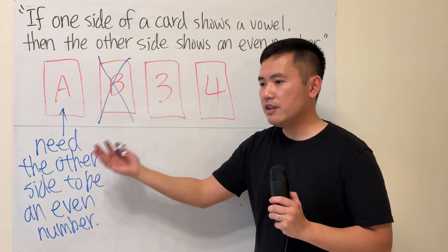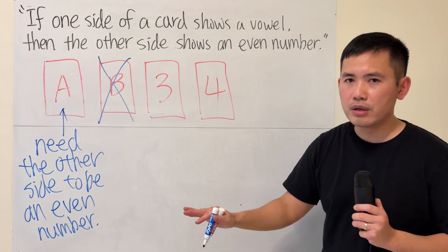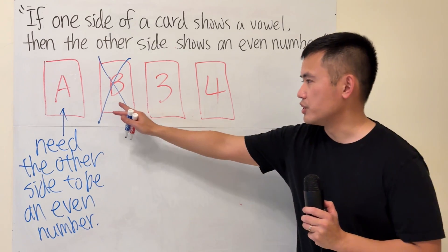So the back can be an even number, it can be an odd number, we don't care. We don't have to check this right here.